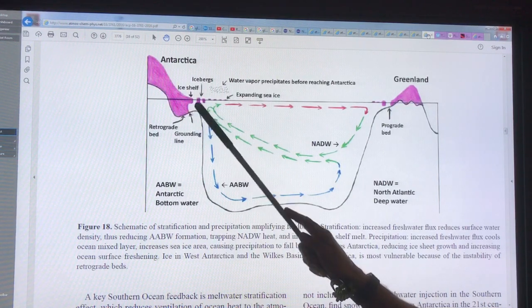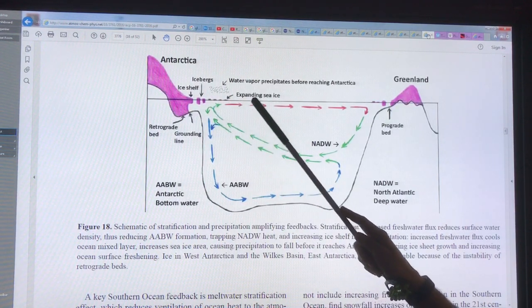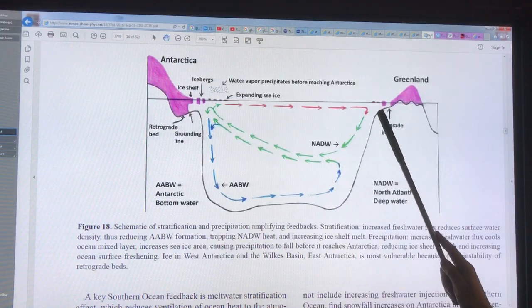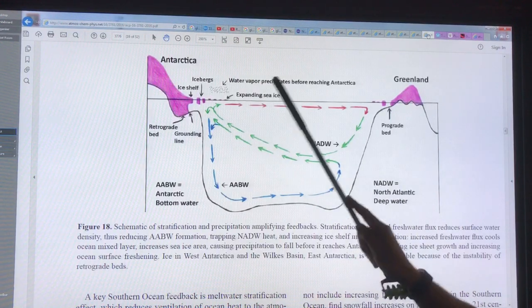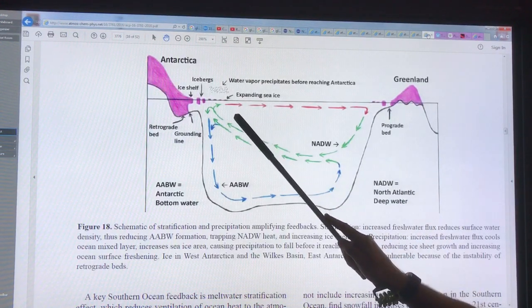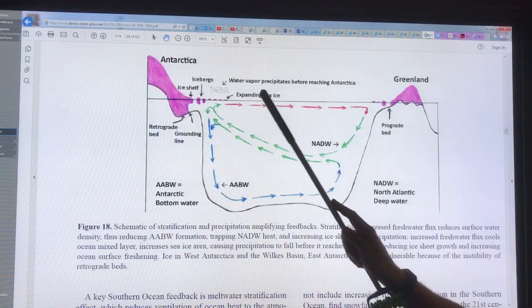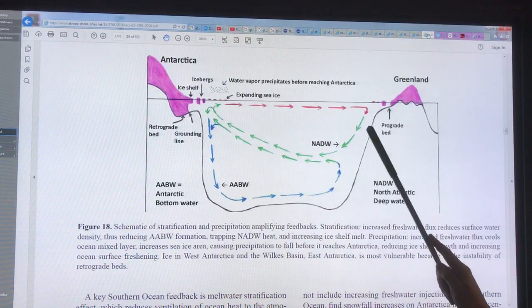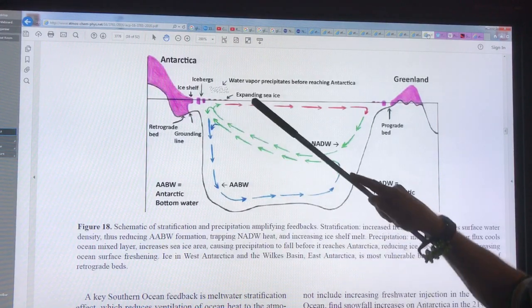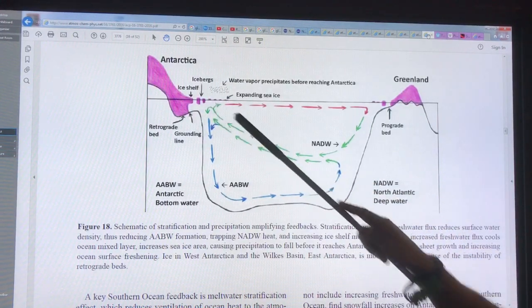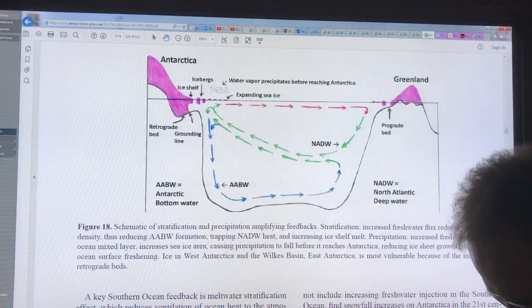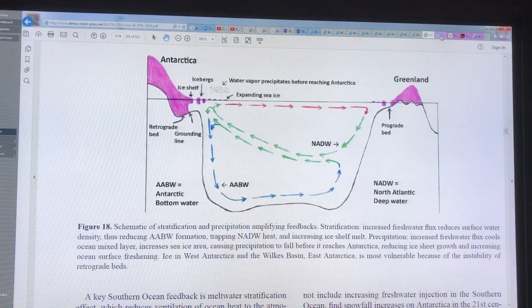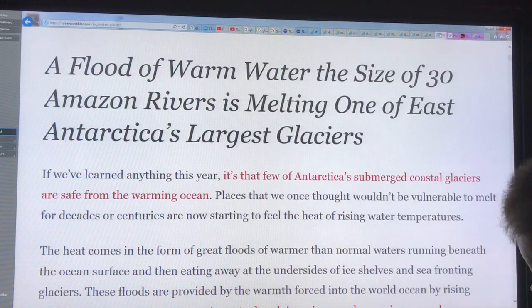This is the expanding sea ice here and these are the currents. You get the North Atlantic Deep Water formed and the Antarctic Bottom Water coming around. As the water freshens up here we're getting less of this, so we're getting more of the North Atlantic Deep Water which is warmer, going in and undercutting the ice more quickly. This is a very strong feedback which is accelerating melt from Antarctica.